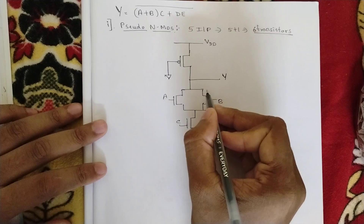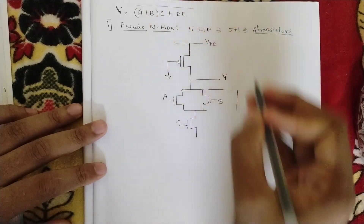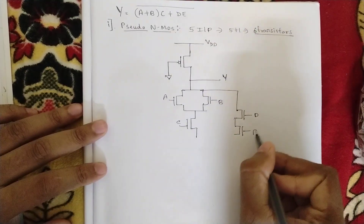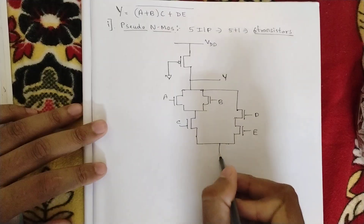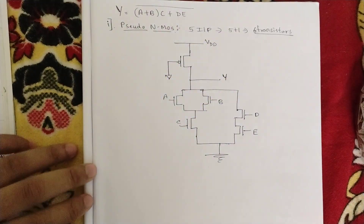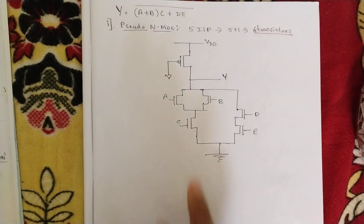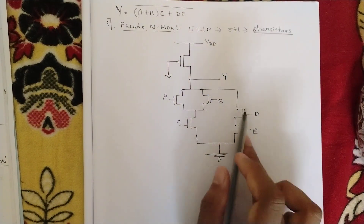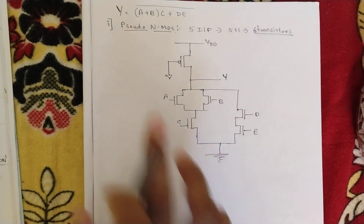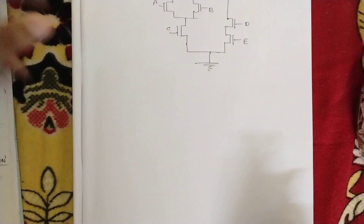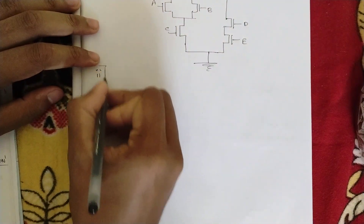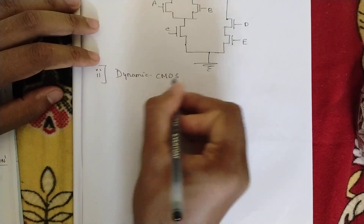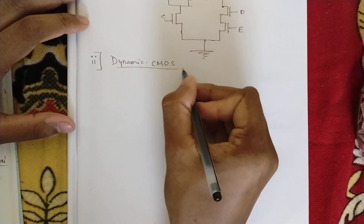Again it's getting added, so from here you should be taking one more parallel branch and d and e should be in series. This is the complete circuit diagram of pseudo NMOS logic for 5 inputs. Here we have used 1 PMOS transistor and 5 NMOS transistors, so totally 6 transistors for pseudo NMOS.